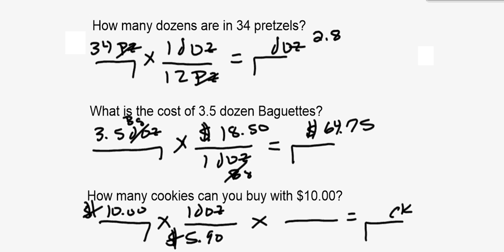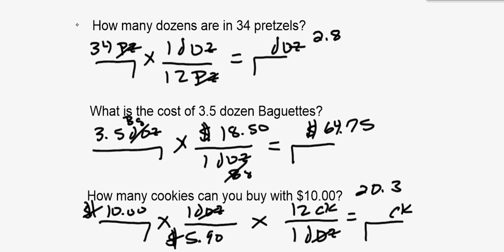Now I know there are 12 cookies per one dozen, so I put 12 cookies on top and one dozen on the bottom. The dozens cross off. Mathematically, I take 10, divide by 5.90, then multiply by 12, which gives me 20.3 cookies. We won't have decimal cookies in reality, but I want you to be very familiar with using decimals for the mole concept.